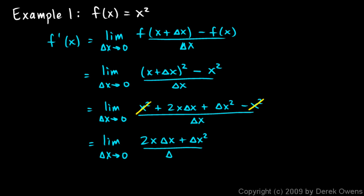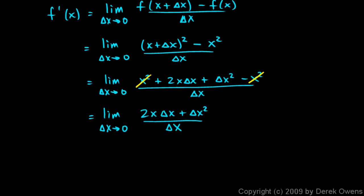And up top, there's a delta x in every term, so we can factor that out and get it to cancel. So we have the limit as delta x approaches zero. I'll factor that out here: delta x times 2x plus delta x over delta x. And these guys cancel out.